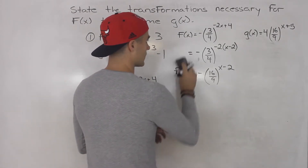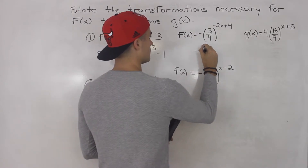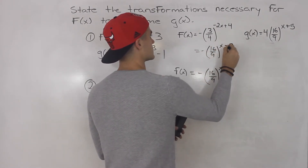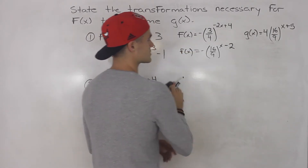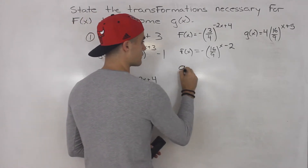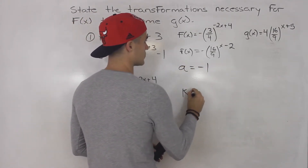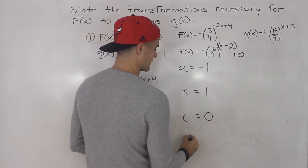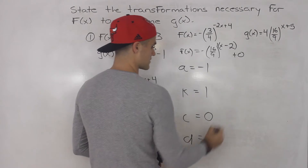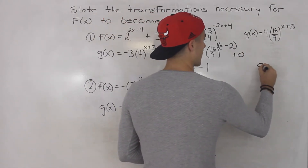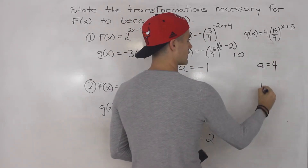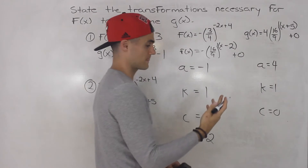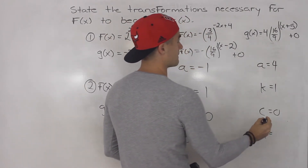Let's list out the transformation values for each. For the rewritten f of x: a value is negative 1, k value is positive 1, c value is 0, and d value is positive 2. For g of x: a value is positive 4, k value is 1, c value is 0, and d value is negative 5.